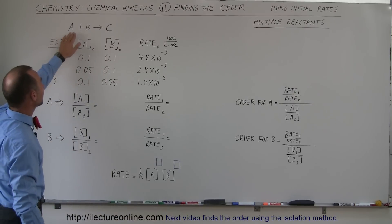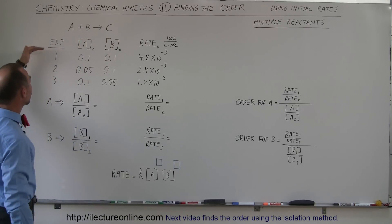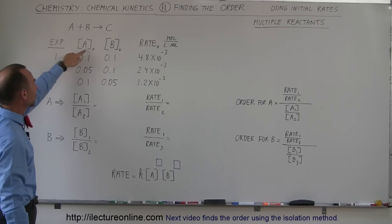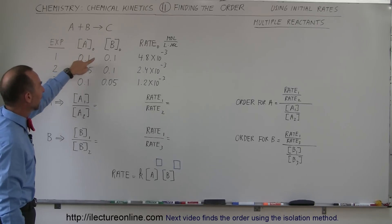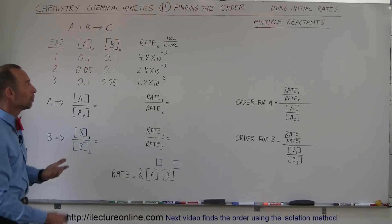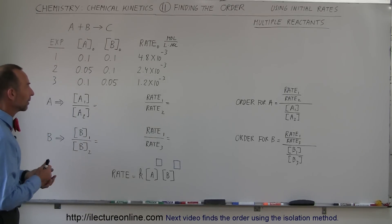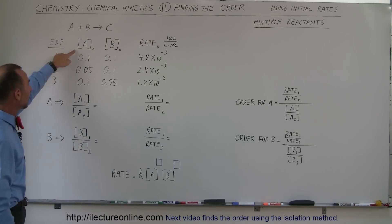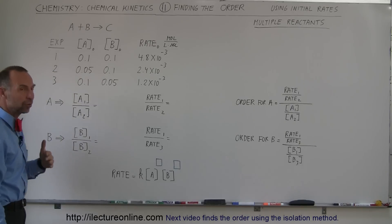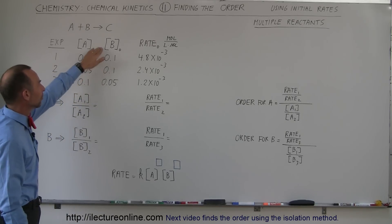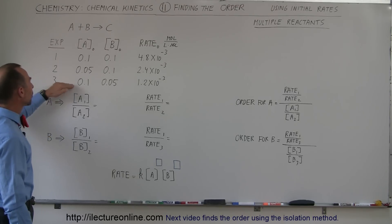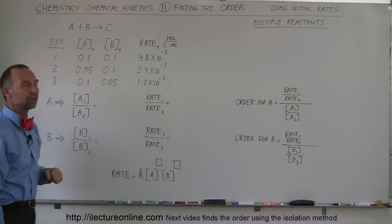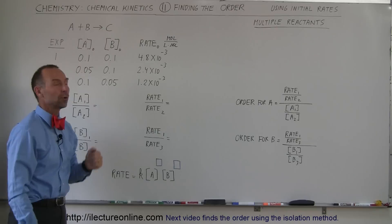Let's say we have two reactants A and B that combine to form C. We'll run three experiments. In Experiment 1, the concentration of A is 0.1 and B is 0.1, and we measure the initial rate in moles per liter per second. In Experiment 2, we halve the concentration of A to 0.05, keeping B the same. In Experiment 3, we return A to 0.1 but halve B to 0.05. In each case we measure the initial reaction rate.